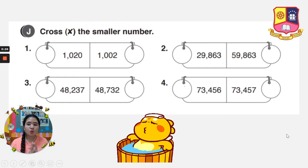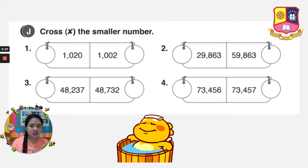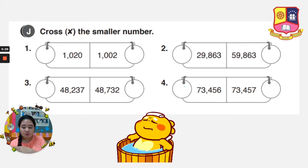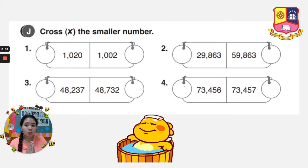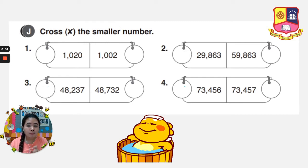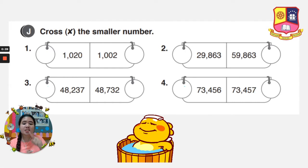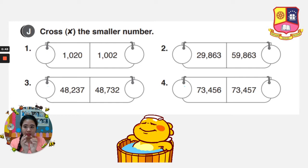We are on letter J, page 8. Last time, in letter I, we ticked the greater number. But in letter J, we have to cross the smaller number. Smaller number. Let's go to number 1.